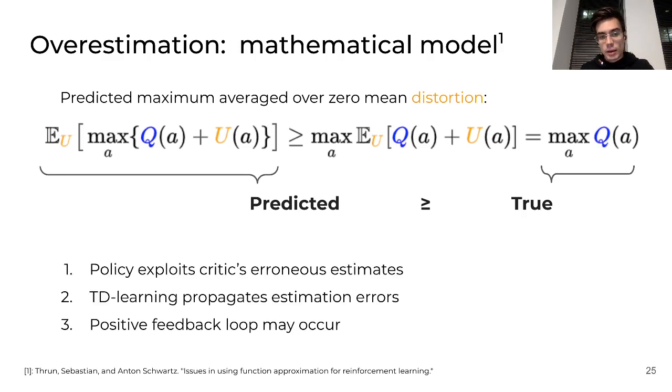In practice, we don't have the maximum, but we have the policy which tries to maximize our approximated value function. And the policy exploits any spontaneous, any erroneous overestimates, overestimations. And during the temporal difference learning, this error, this overestimation, is propagated through time. So how do we handle this?